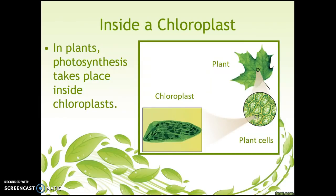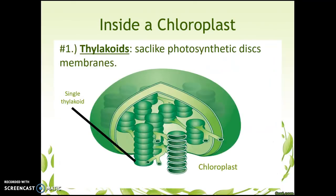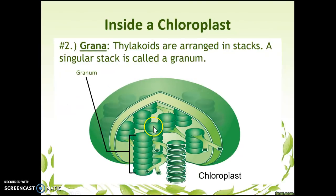In plants, photosynthesis takes place inside our chloroplasts. If we look really close at plant cells, we see all these little green dots — those green dots are chloroplasts. Inside the chloroplasts we have a couple of structures. First, we have these sac-like photosynthetic discs surrounded by membranes called thylakoids — each disc looks kind of like a green M&M. A stack of thylakoids together is called a granum, and all of the grana together are found in the chloroplast.